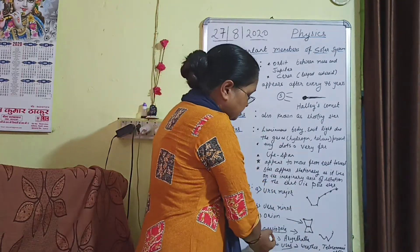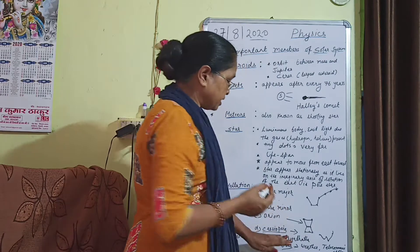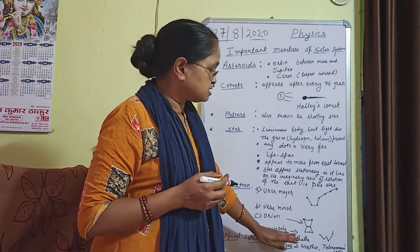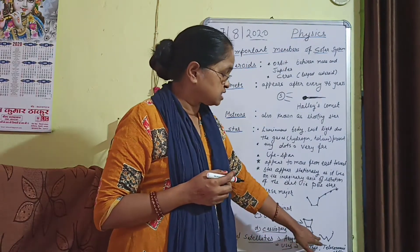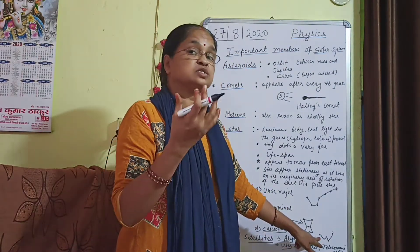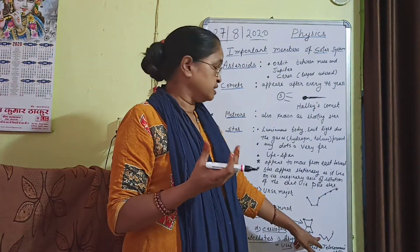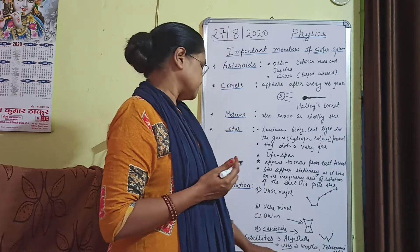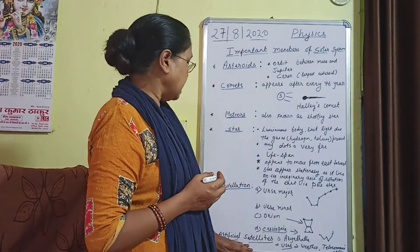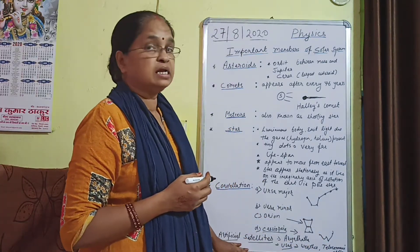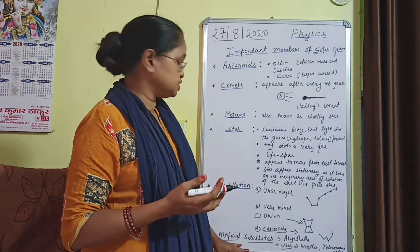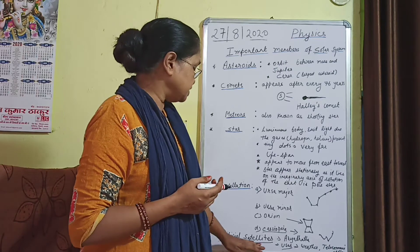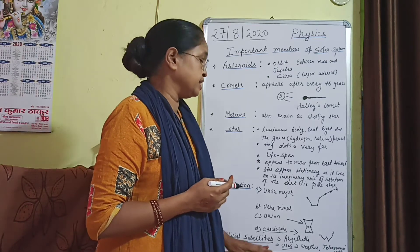Next we come to Cassiopeia. Cassiopeia is a constellation which appears to be a distorted letter W or M. The last topic we will finish is artificial satellites.